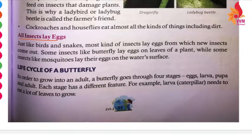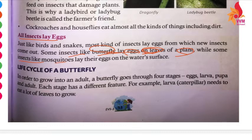Next, what do insects do with eggs? They lay eggs, the eggs become babies, and then they become adults. Insects like butterflies lay their eggs on plant leaves. Some insects like mosquitoes lay their eggs on the surface of water.